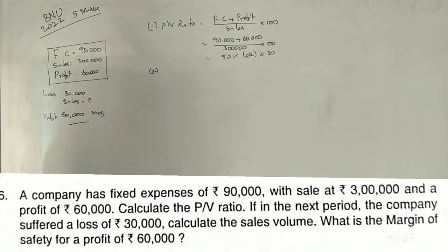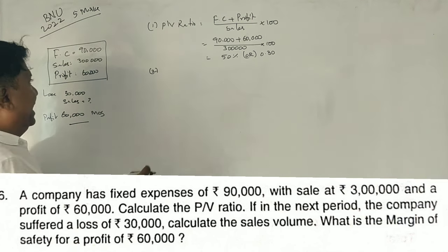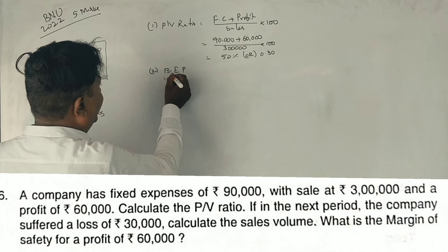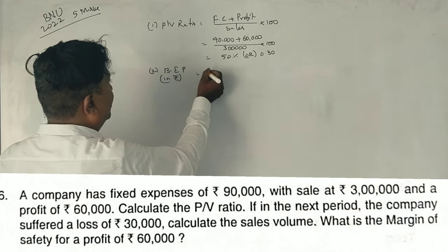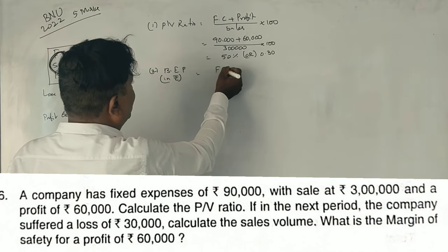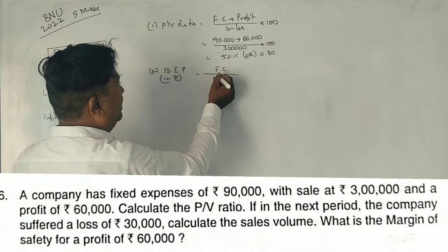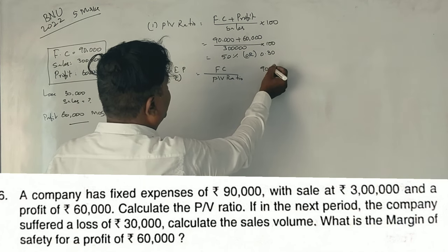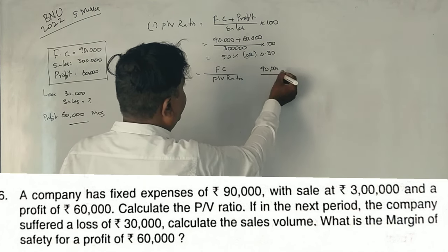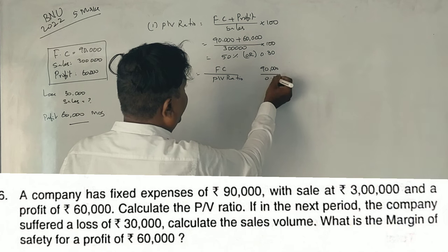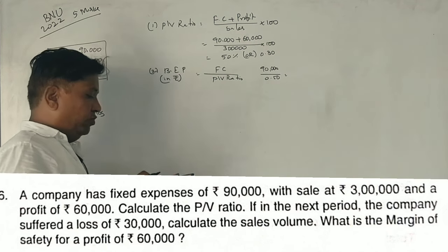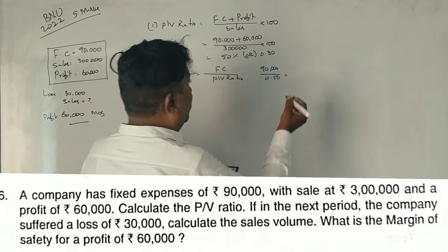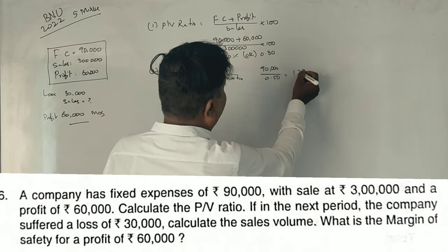Next, calculate the break-even point. Break-even point in rupees is fixed cost divided by PV ratio. Fixed cost is 90,000 rupees and PV ratio is 0.50. So, 90,000 divided by 0.50 is 1,80,000 rupees.